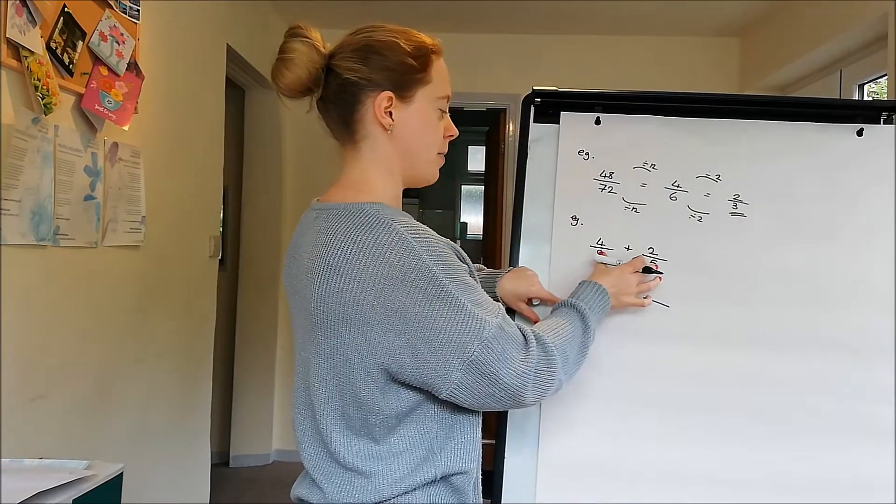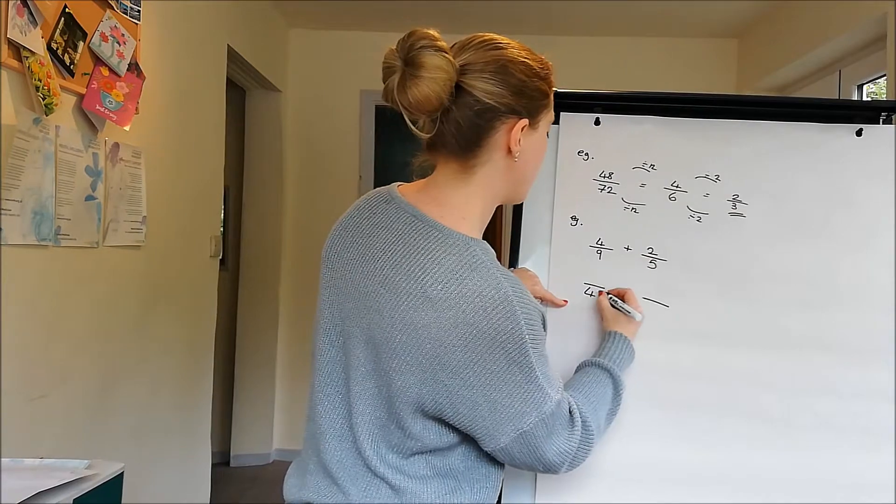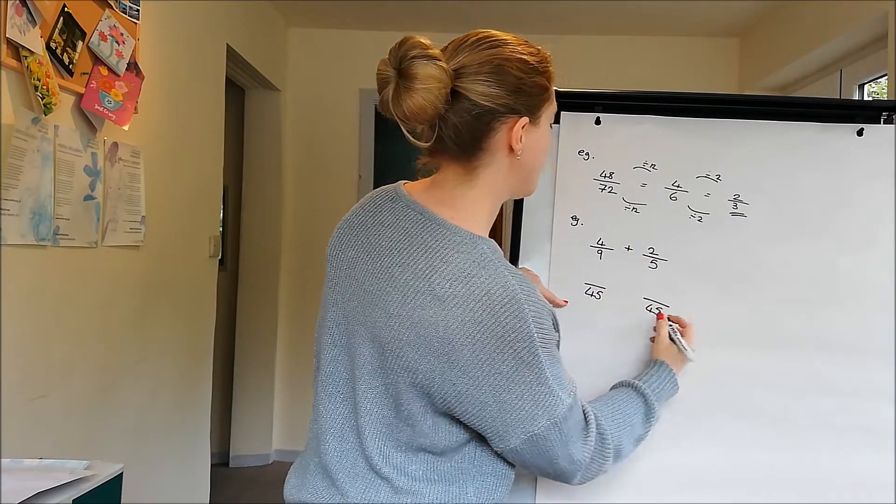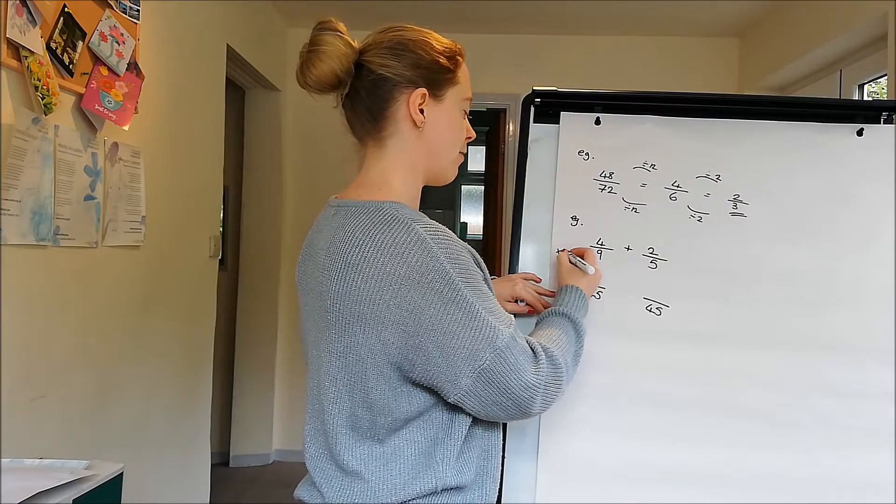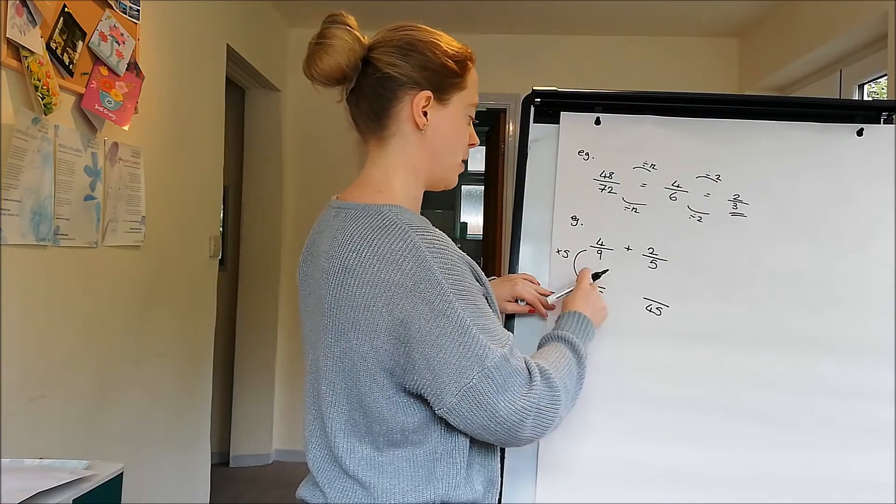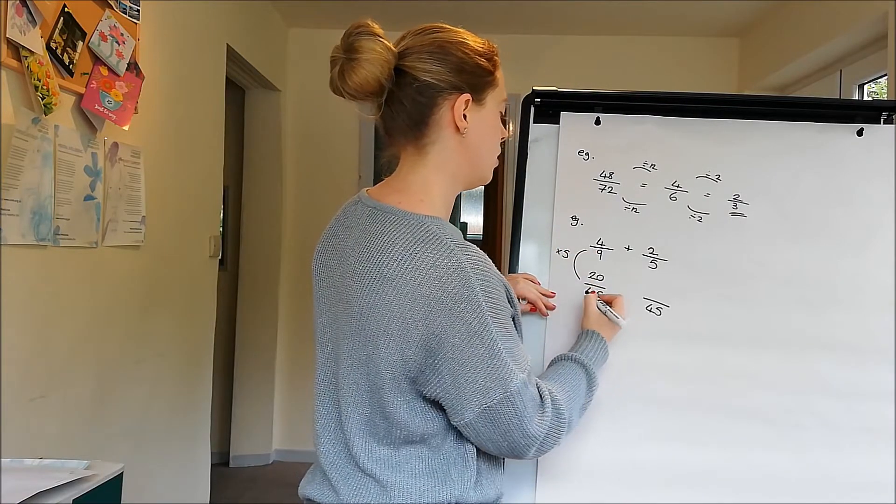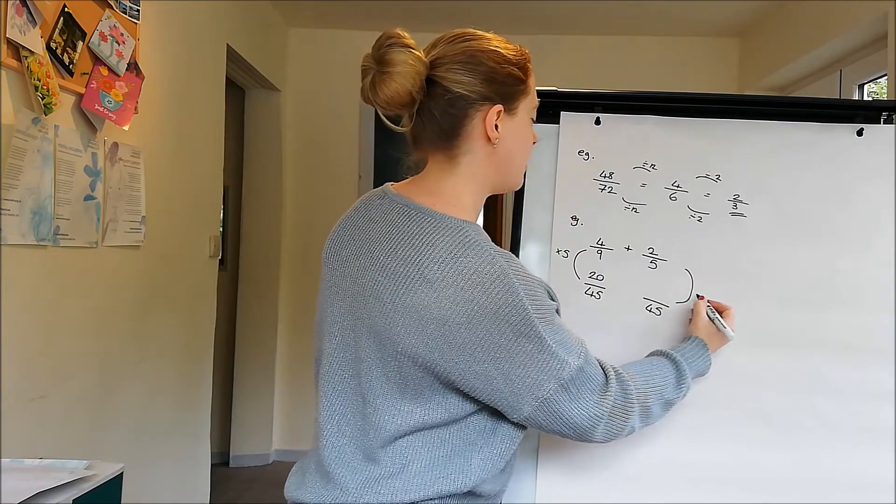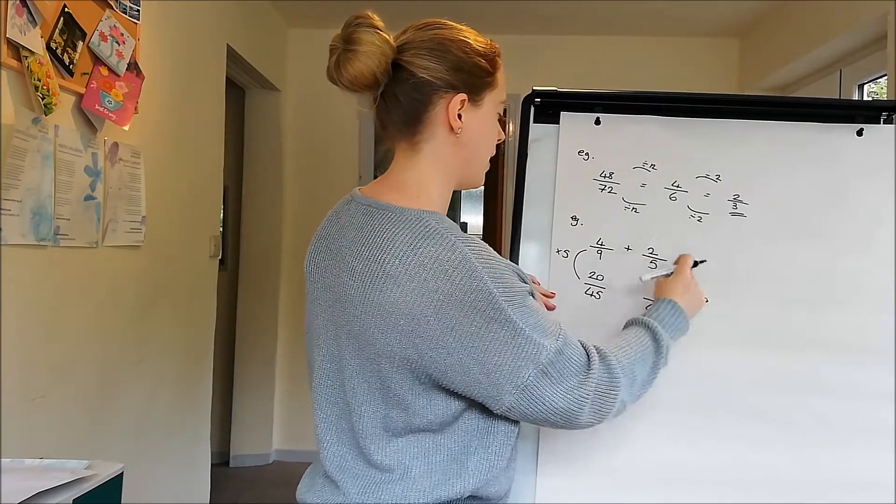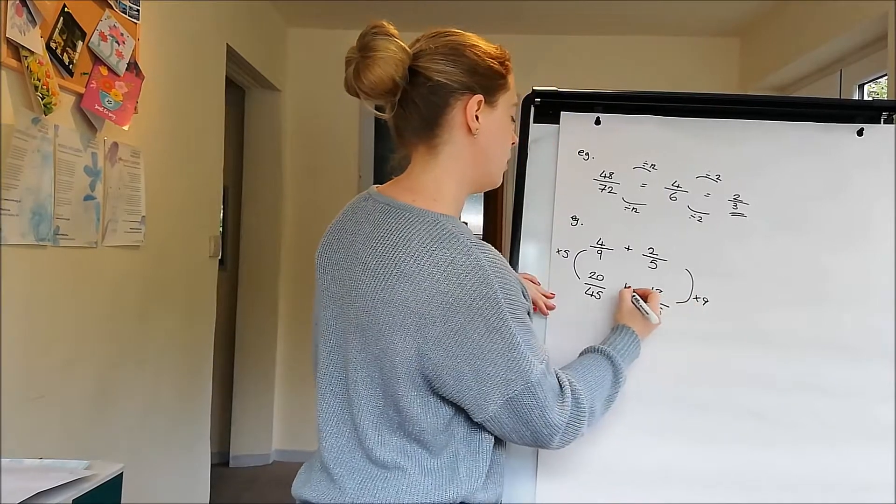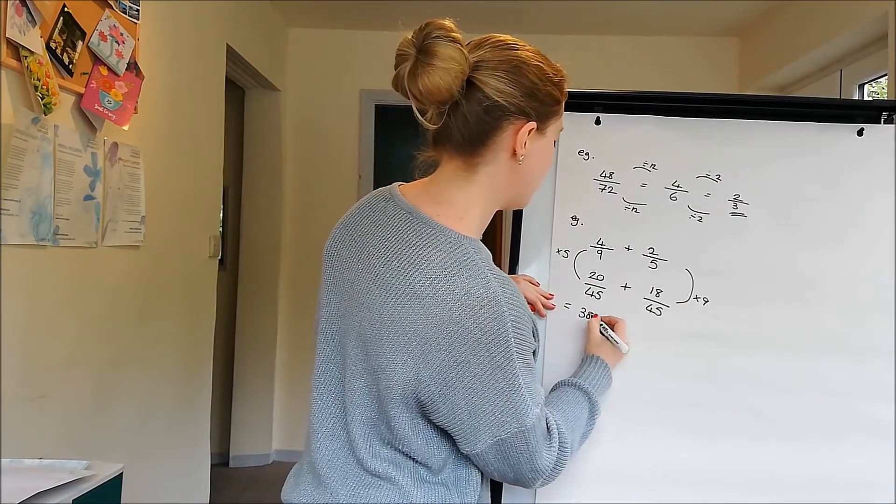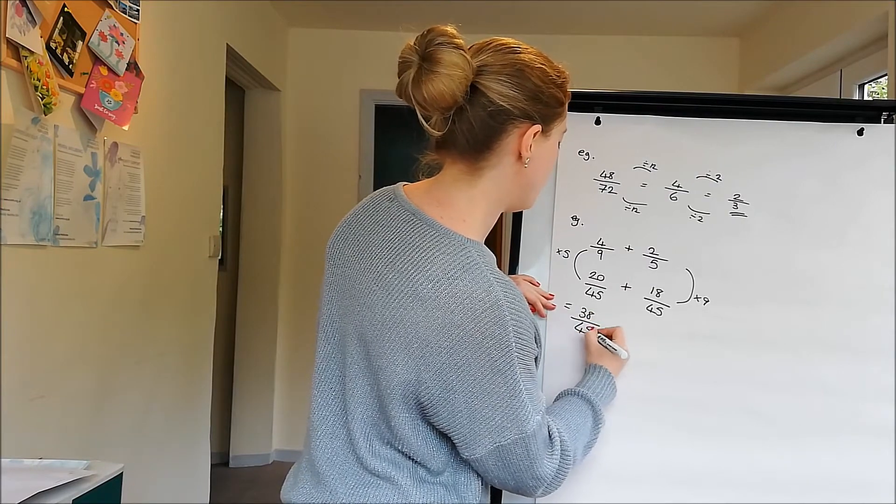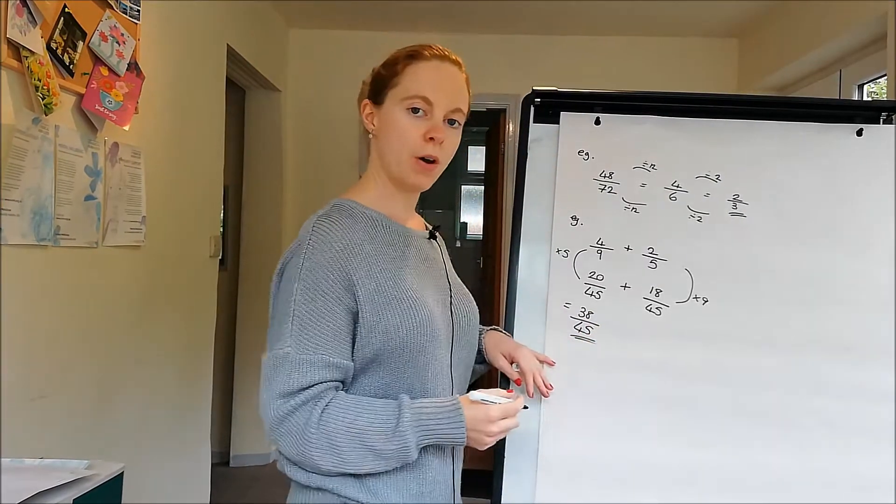For example, 4 ninths plus 2 fifths. We can get a common denominator by timesing those bits together, so our common denominator can be 45. To get from there to there I've multiplied by 5 so I need to do the same to the 4. To get from there to there I've times by 9 so I need to do the same to the 2. And then 20 plus 18 makes 38, and I'm working in 45 fifths.